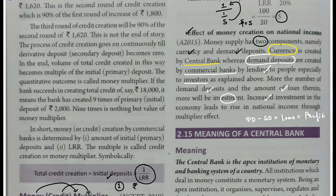Increased investment in the economy leads to rise in national income through multiplier effect. Jitni zyada investment hogi economy ke andar, uska effect national income badhne mein aayega multiplier effect ki wajah se. Kyunki wo paisa log save karwayenge banks mein, aur bank usse credit creation karega - loan dekar. Loan jo person le raha hai wo koi na koi activity karne ke liye le raha hai - business setup karne ke liye - wo economy ka part hai.